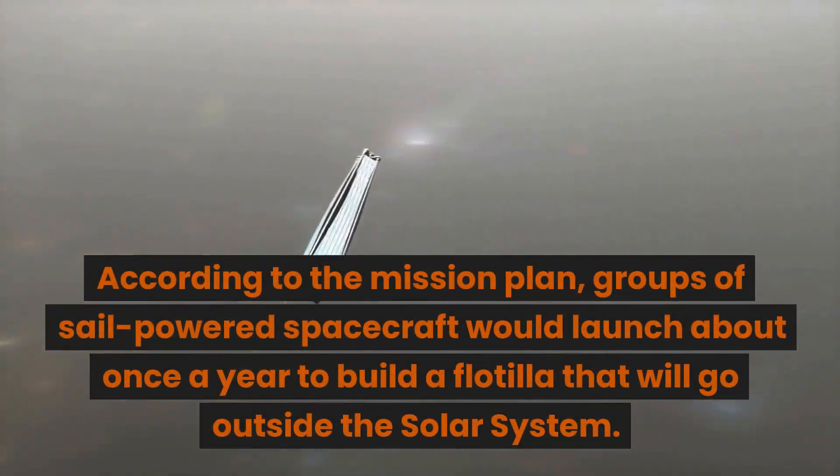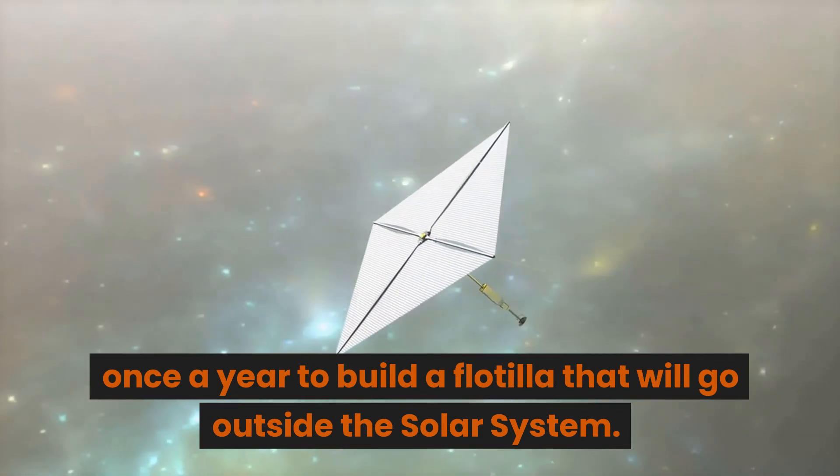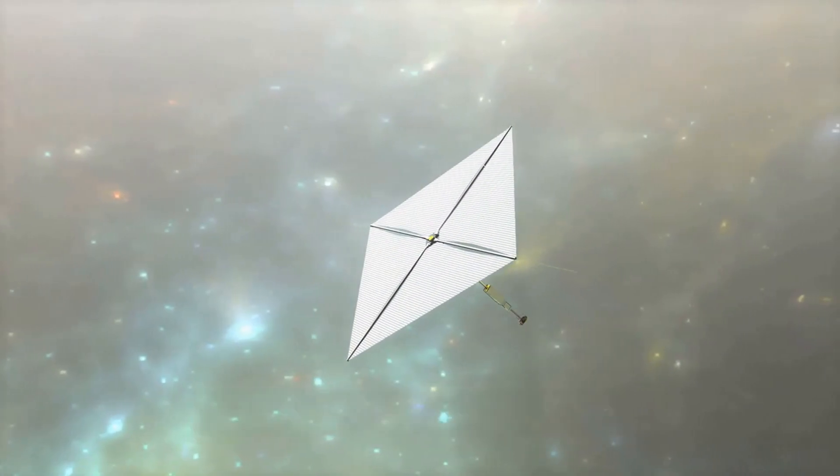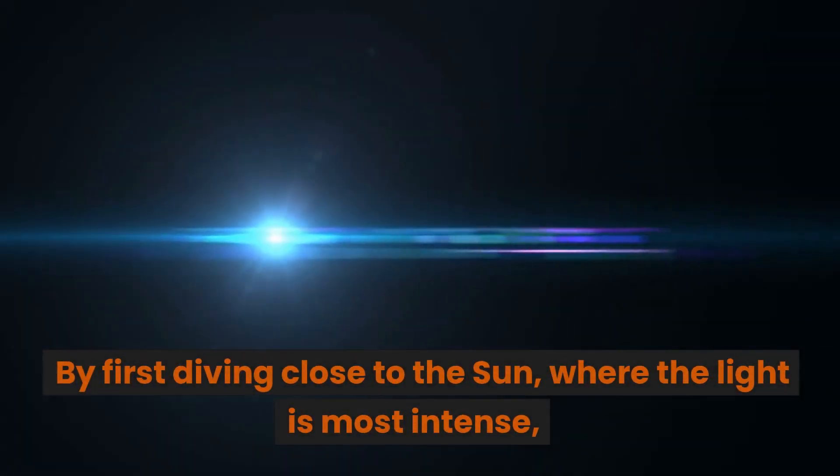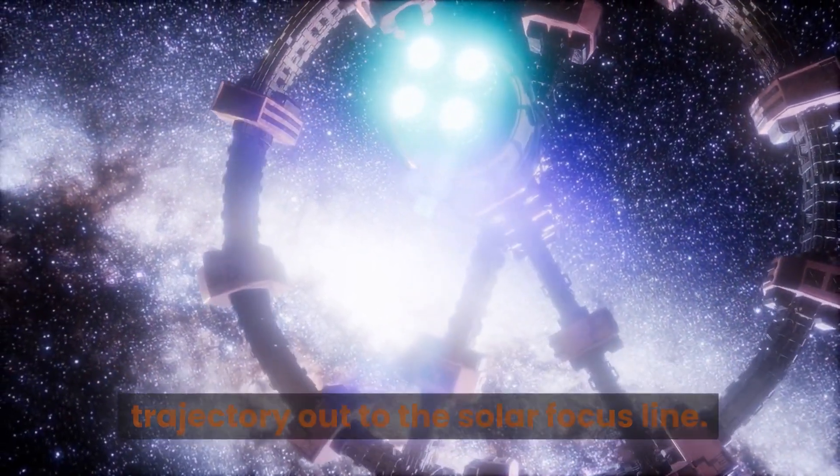According to the mission plan, groups of sail-powered spacecraft would launch about once a year to build a flotilla that will go outside the solar system. By first diving close to the sun, where the light is most intense, each spacecraft cluster can establish a fast trajectory out to the solar focus line.